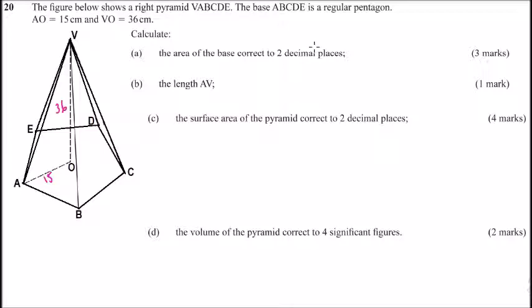We are required to calculate the area of the base correct to two decimal places. The base is a regular pentagon. For us to get the area, we can divide the pentagon into five triangles. If we get the area of one triangle multiplied by five, that will give us the area of the base.